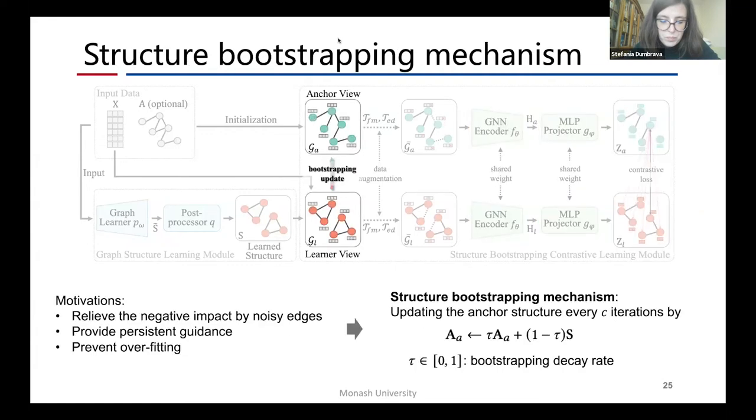To relieve the negative impacts by noise edges, provide precision guidance, and prevent overfitting, we further introduce a structural bootstrapping mechanism to update the anchor view with the learned structural information. Concretely, we update the anchor structure every C iterations by a slow-moving average of the original anchor structure and the learned graph structure. Here, we use the hyperparameter tau as the bootstrapping decay rate to control the update strength.